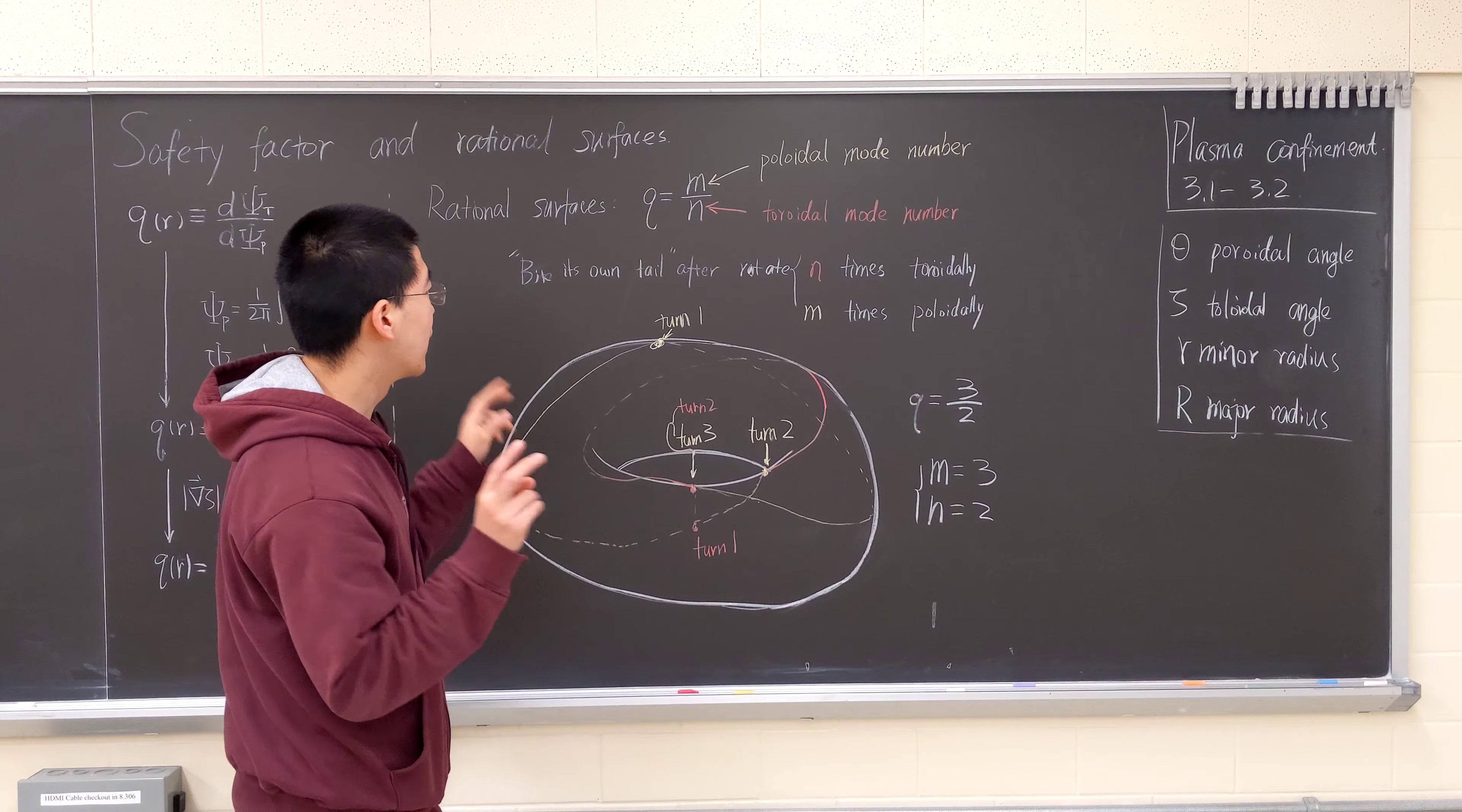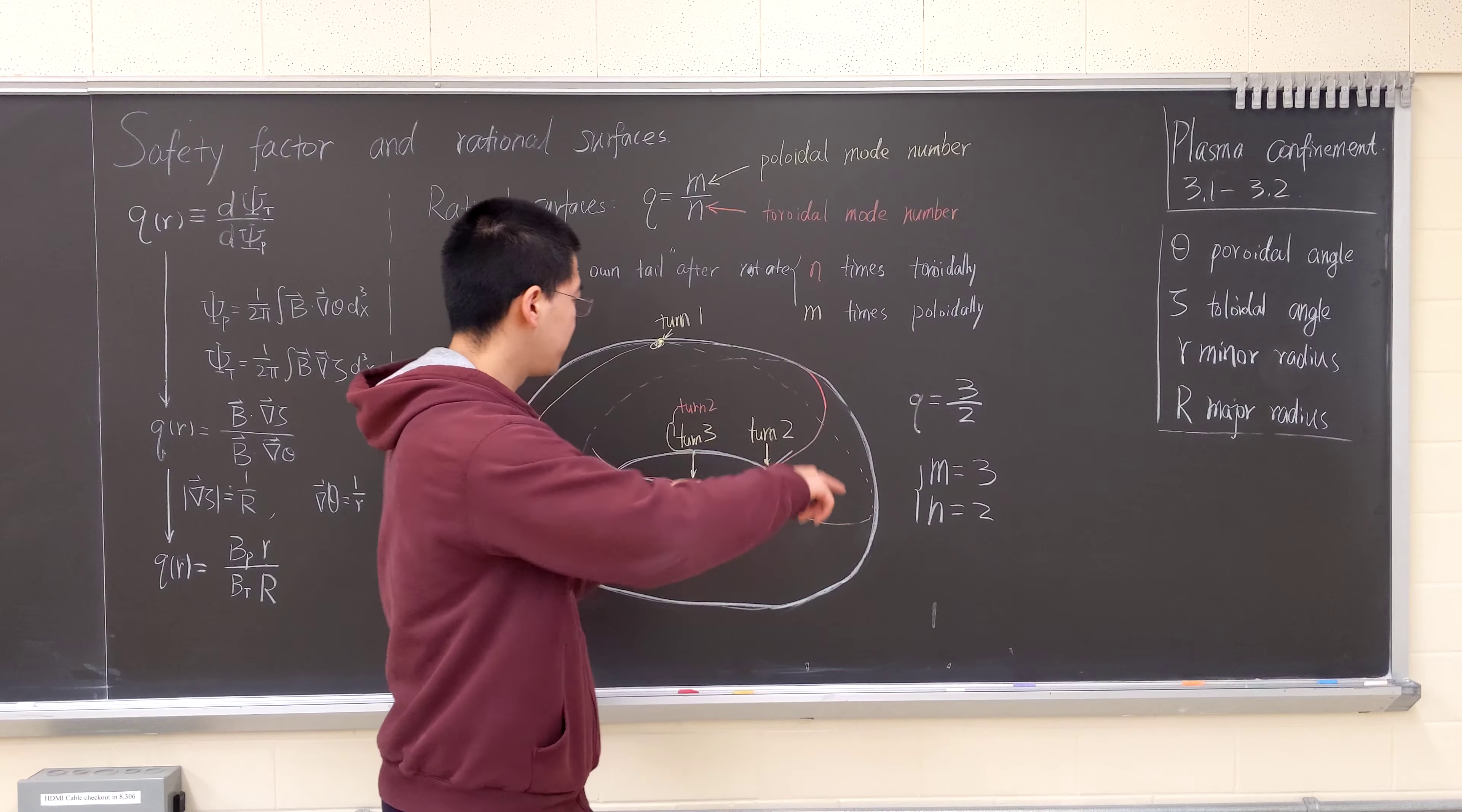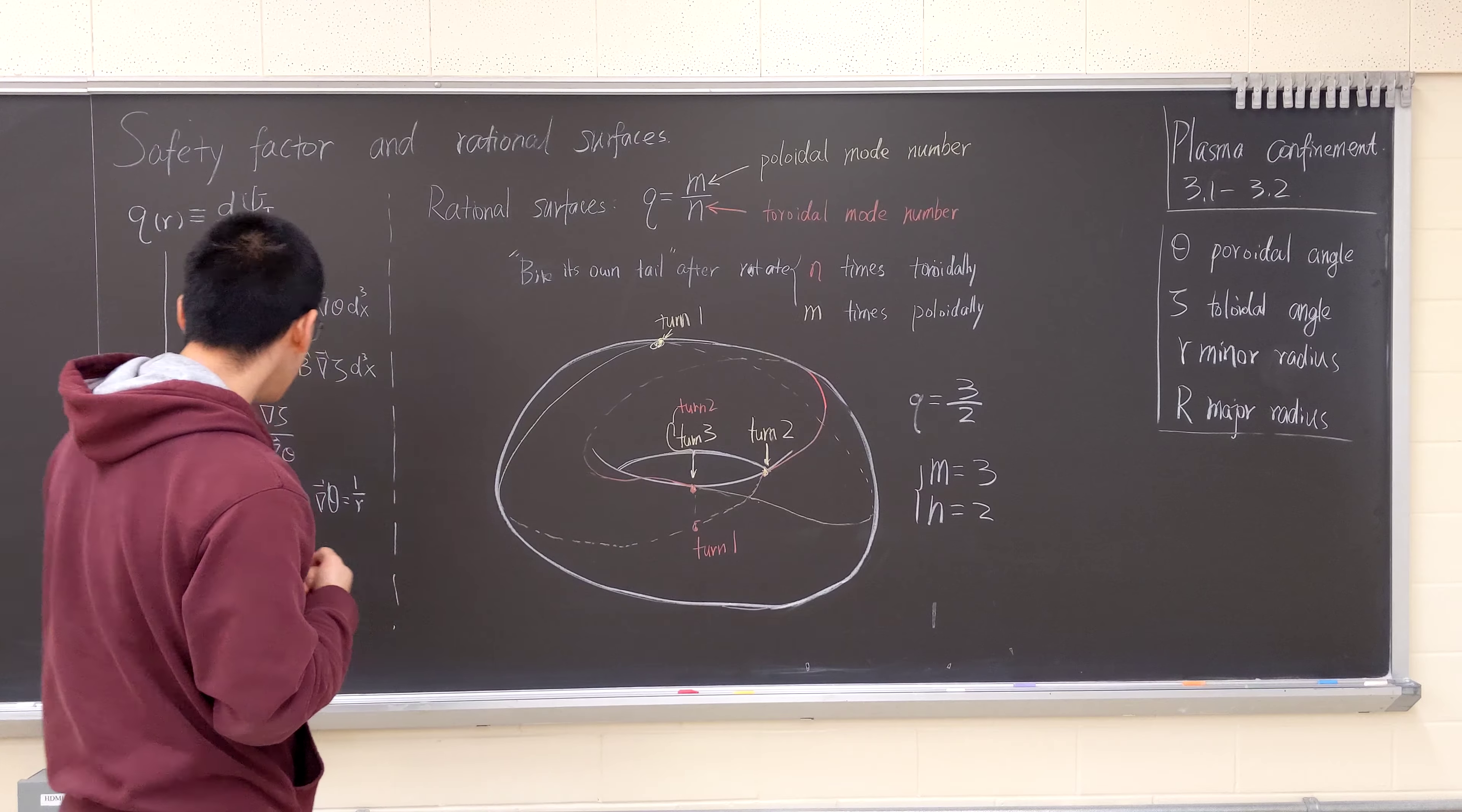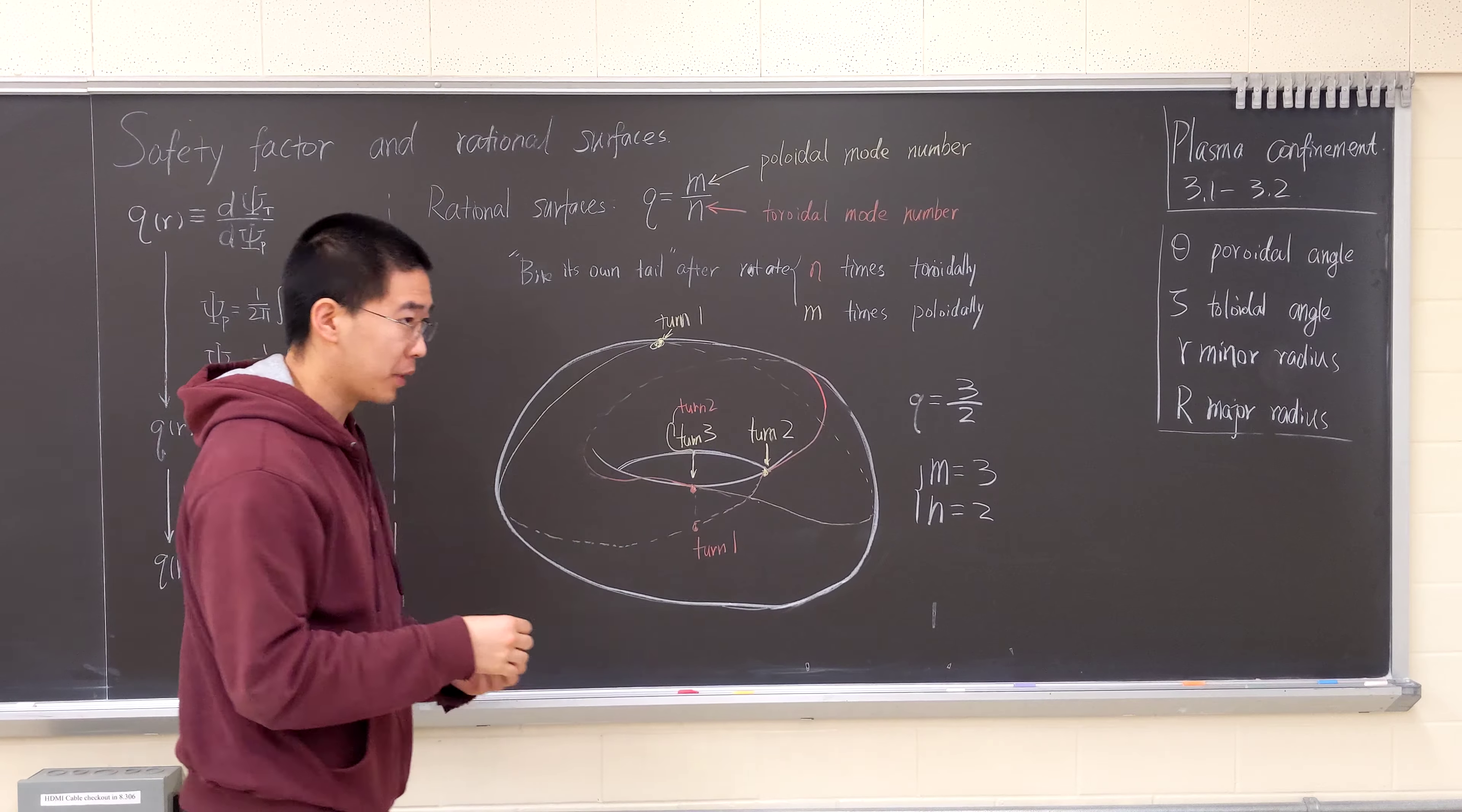So it will bind its own tail after rotating n times toroidally and m times poloidally. So of course, rotating is basically what I mean.